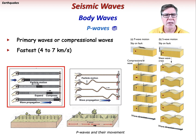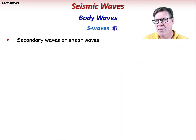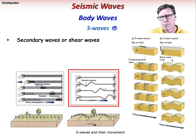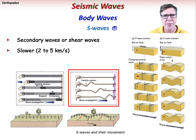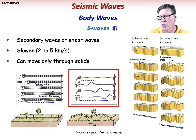P waves are the faster of the two body wave types, with velocities typically ranging from 4 to 7 kilometers per second. Since they travel via a compressional motion, P waves can move through both solids and liquids. S waves, or secondary waves, are shear waves that move perpendicular to their line of travel — analogous to snapping a rope attached to a post. S waves are the slower body wave type, with velocities ranging from 2 to 5 kilometers per second. Since they travel via shear motion, S waves can only move through solids, not liquids. This property has been used to identify the location of the liquid outer core of the Earth and to identify magma bodies.